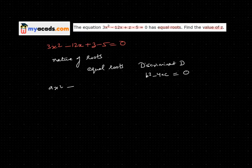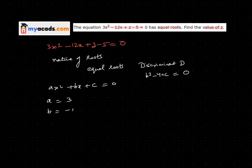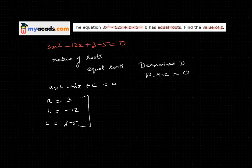I compare this to my standard form of quadratic equation. So my a will be equal to 3, b will be minus 12, and c will be z minus 5.